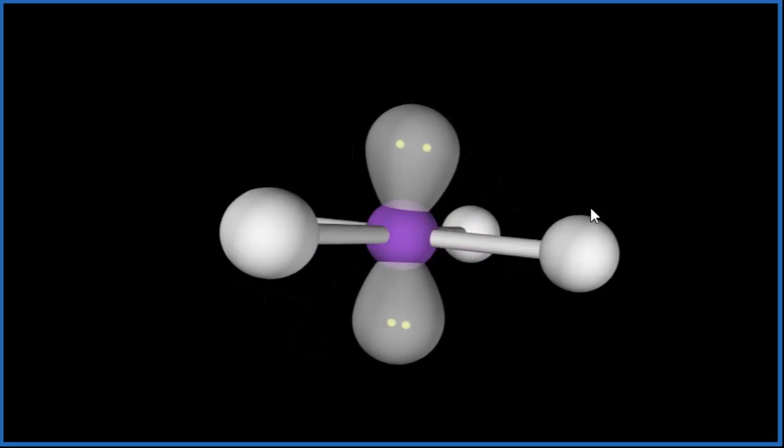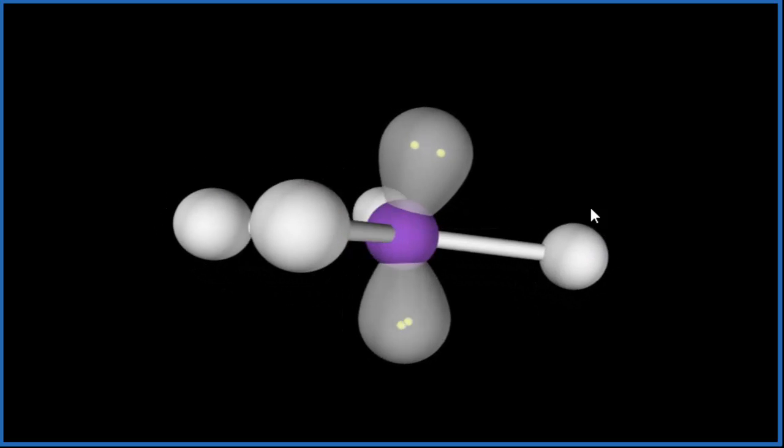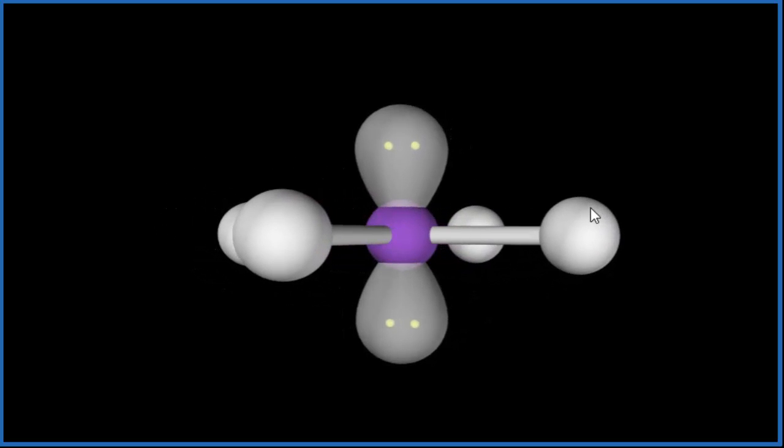And you can see that plane with the square in it, the four chlorine atoms, the iodine in the middle. And then we have the lone pairs on either side.